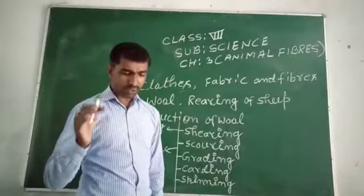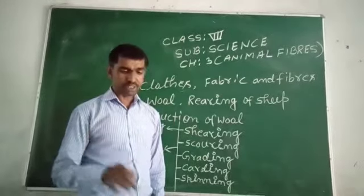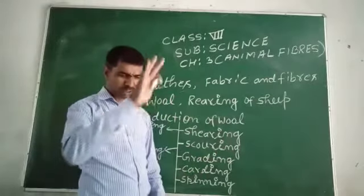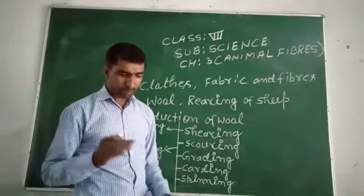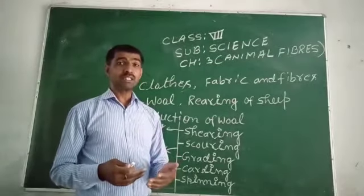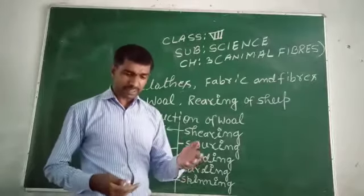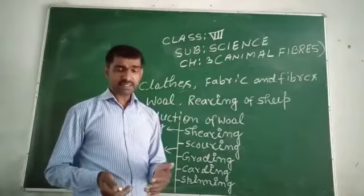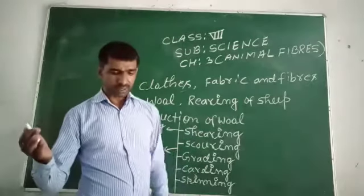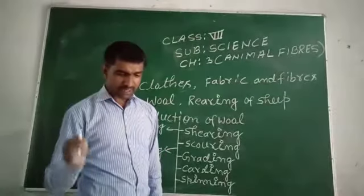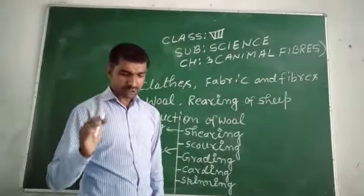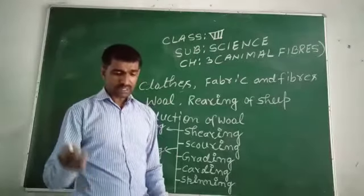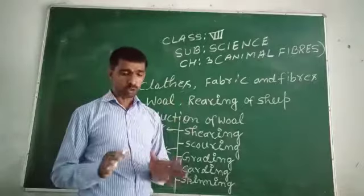After grading, carding. The washed and graded wool is straightened and passed through a machine. The machine lays the fibers parallel to each other so they can easily be used to make yarn. Residual dirt and other matter sticking to the fibers are also removed in the process of carding.